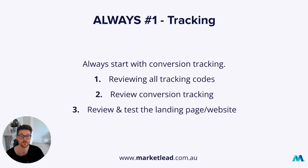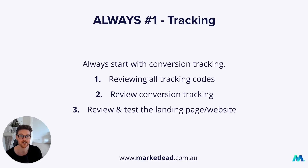Make sure all the tracking codes are on the website — the base pixels, Google Tag Manager, Google Analytics — and most importantly, that conversion tracking is there. A lot of the time the conversion tracking isn't there, or they're tracking the wrong things: micro conversions instead of macro conversions, or random conversions. Make sure you're really clear on that from the start, especially in this new automated bidding model, because Google and any ad platform will be optimizing towards those conversions.